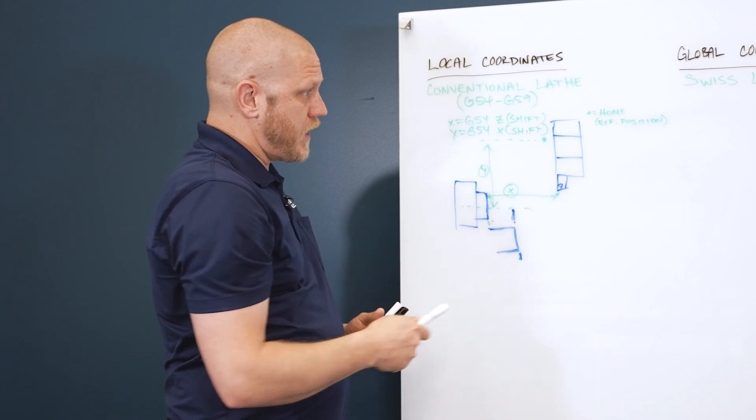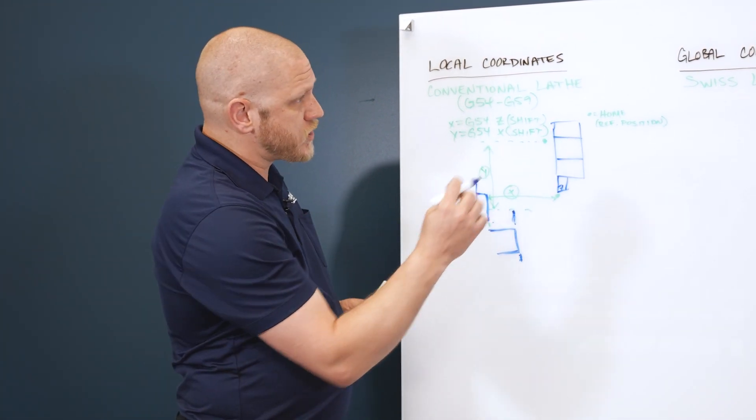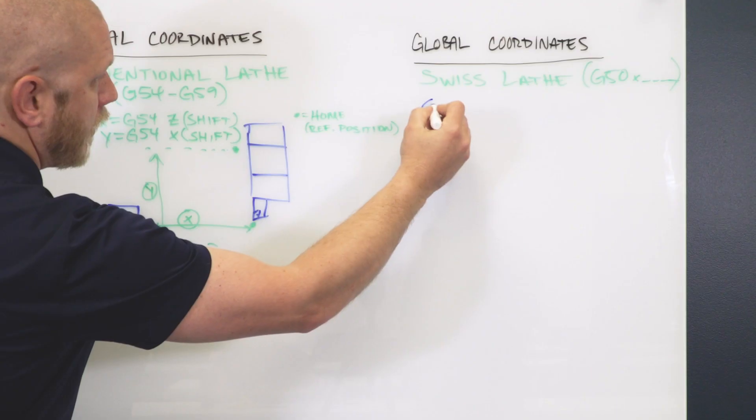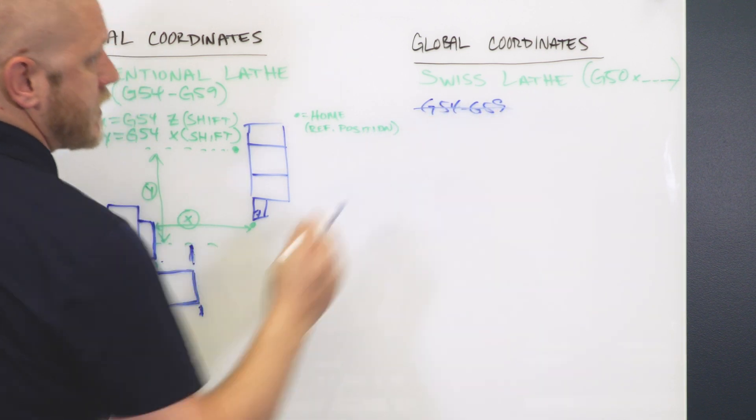What a Swiss does is you can do the same thing and you can shift it a hundred times if you wanted to. Just every time, a Swiss does not use G54 through G59. It does not use these.